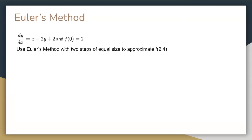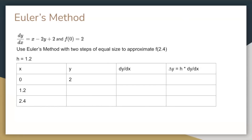Euler's method is a way to get numerical approximations to the solution of a differential equation. In this problem, we have an initial condition at x equals 0, and we want to approximate f of 2.4 with two steps of equal size. That means the step size h is 1.2. To solve this problem, it's best to create a table containing x, y, dy over dx, and the change in y. Now we solve for dy over dx at our initial point (0, 2). We get negative 2, so the change in y is negative 2 times 1.2, or negative 2.4. And our next y value is 2 minus 2.4, or negative 0.4. Now, evaluating dy over dx at (1.2, negative 0.4), we get 4, so the change in y is 4.8. And our new y value is negative 0.4 plus 4.8, which is 4.4, and that is the answer to the problem.